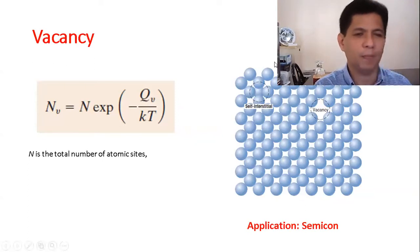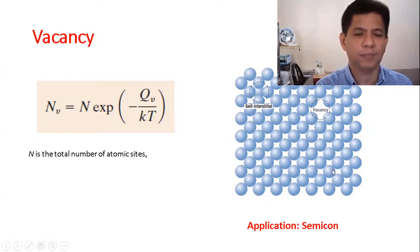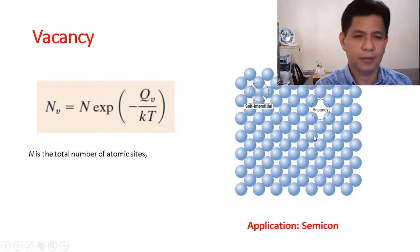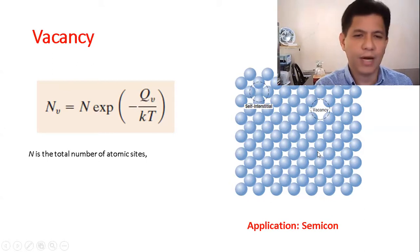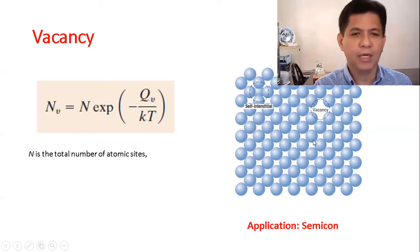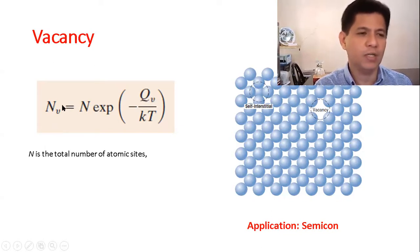The first type of imperfection we are going to look at is vacancy and self-interstitial. As you can see in this figure, the vacancy is the one which has application in the semiconductor industry. If you recall your semiconductor material — silicon — the vacancy in silicon makes it conductive or non-conductive. NV is the number of vacancies, usually expressed as number of vacancies per cubic meter.